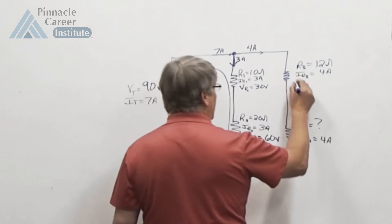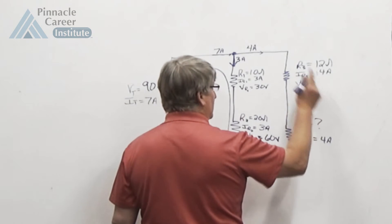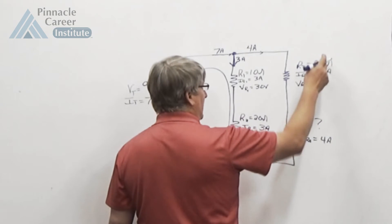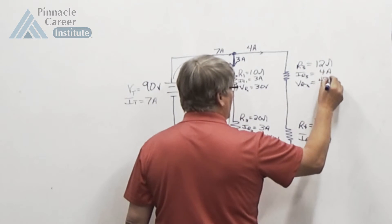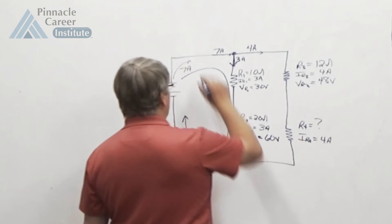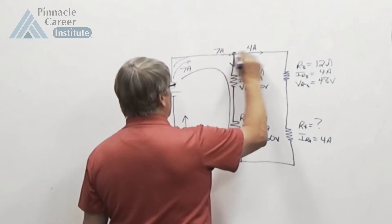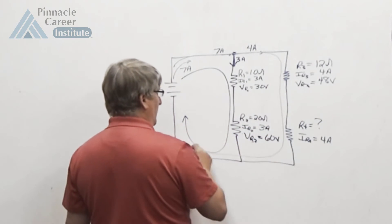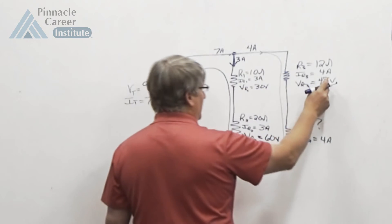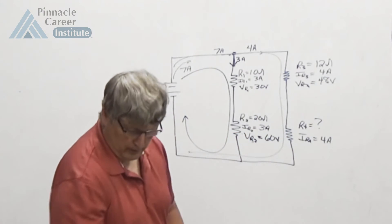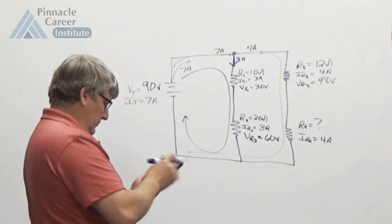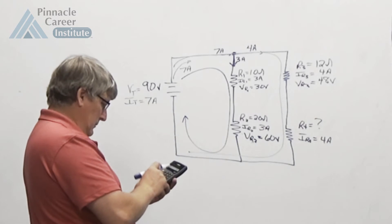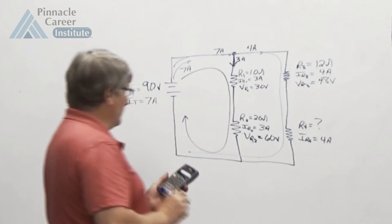I can solve for VR3. VR3 equals I times R, which is 4 times 12, which is 48 volts. And I also know I've got 90 volts now total coming around. So 90 minus 48, that is 42.